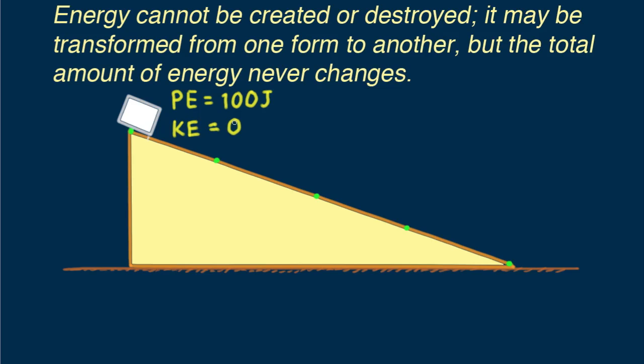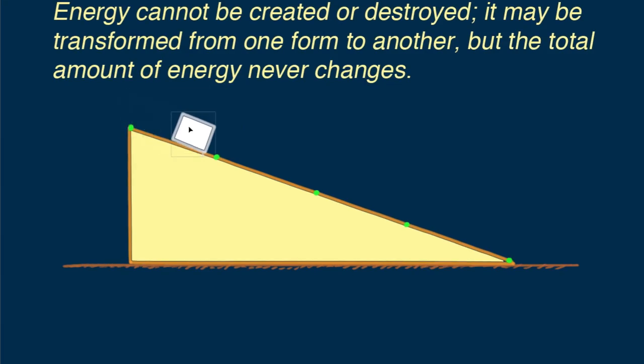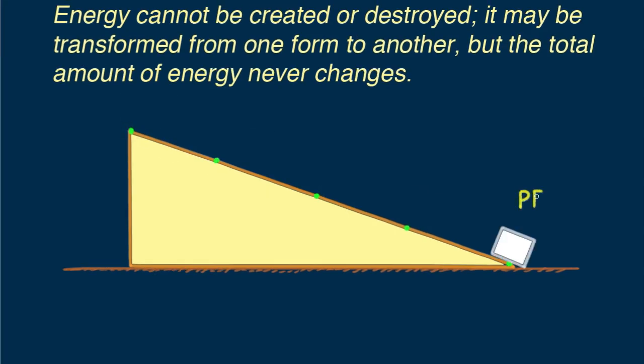Since the potential energy at the top is a hundred joules with respect to the bottom, can you see that potential energy at the bottom is then zero? And what does that tell you about the kinetic energy at the bottom? Can you see it must be a hundred joules?